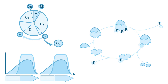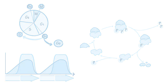Here we'll learn about cell cycle control in human cells. Cell cycle regulation has been studied in a number of model organisms, from yeast to sea urchins. We'll specifically study cell cycle checkpoints and cell cycle regulation via cyclin CDK activity.